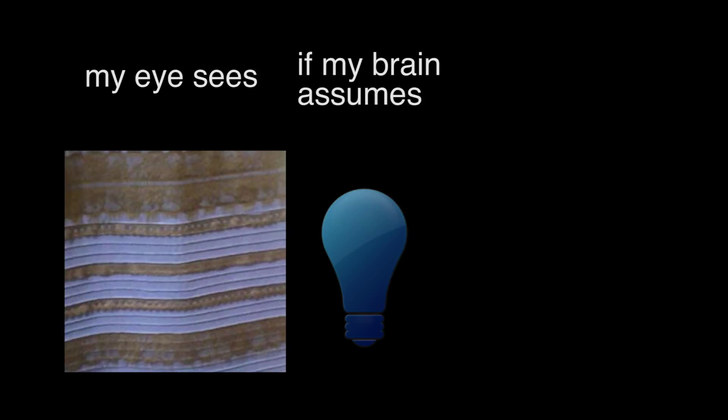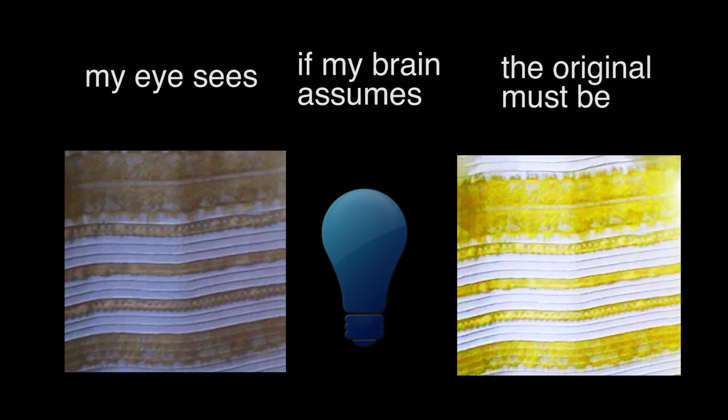Now my eye sees this color on the screen, this set of colors on the screen. If my brain assumes that the dress is being illuminated by a dim blue bulb, I think oh it must have been much brighter and yellower for it to come out looking like that in that color light.